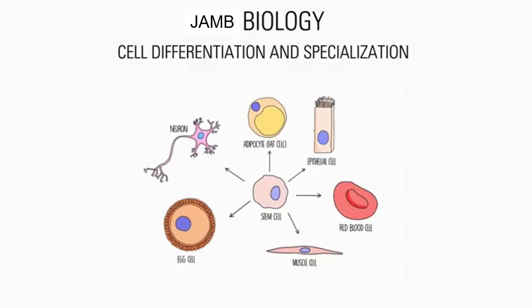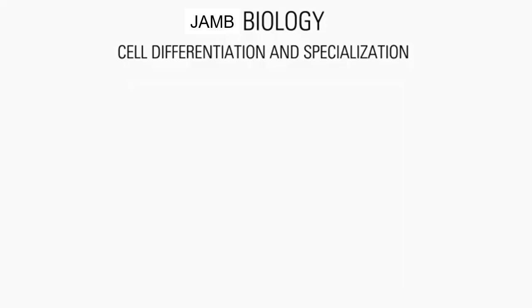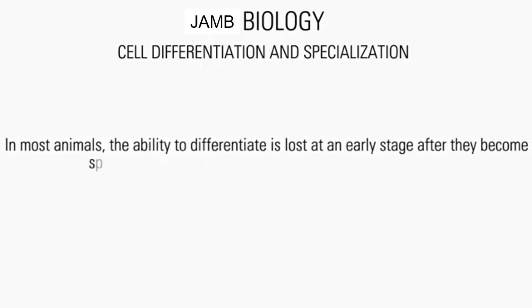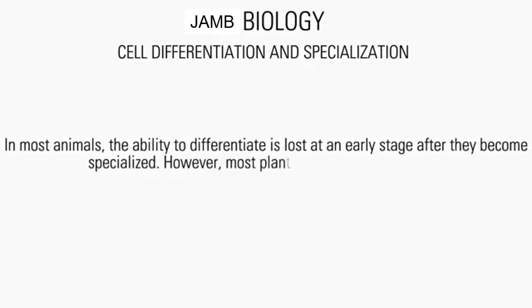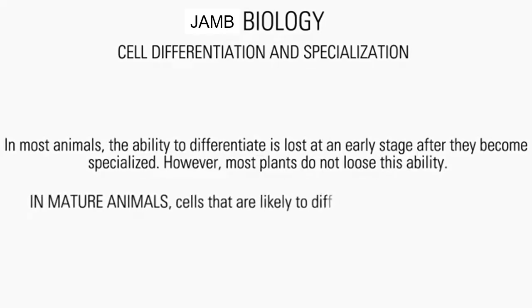In most animals, the ability to differentiate is lost at an early stage after they become specialized. However, most plants do not lose this ability. In mature animals, cells that can still differentiate are mainly used for repairing and replacing other cells.